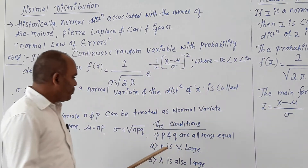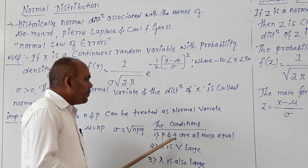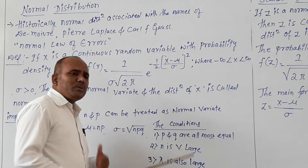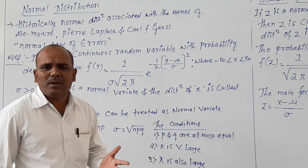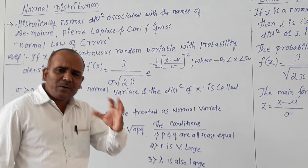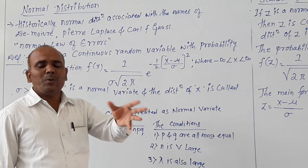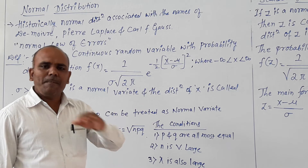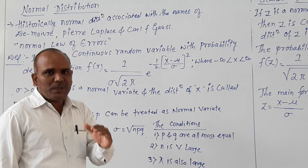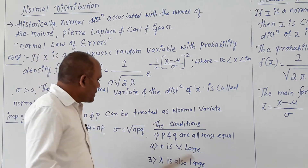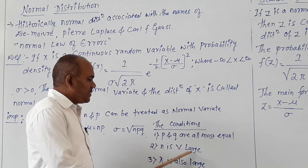The conditions are: first, p and q are almost equal — neither p nor q is very small. Second, n is very large.